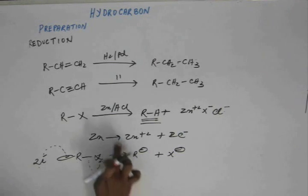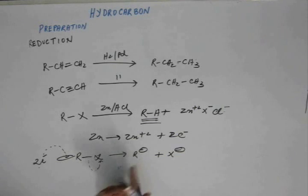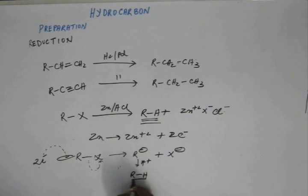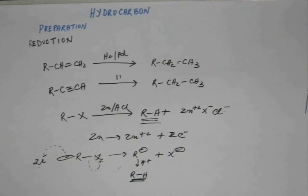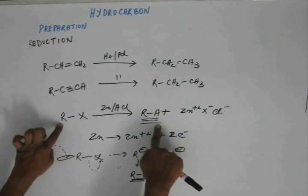This R⁻ will then grab H⁺. Since HCl is a strong acid it is already ionized, so H⁺ is floating in the system and R⁻ grabs that H⁺ to form RH. R⁻ is by no means stable, so wherever H⁺ is available — from the solvent or from dilute HCl — R⁻ will bond with H⁺ to give RH. This is a reduction because in RX we have effectively added hydrogen and removed the halogen, giving us the alkane.